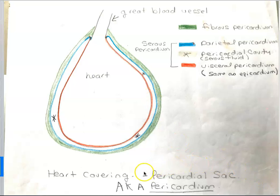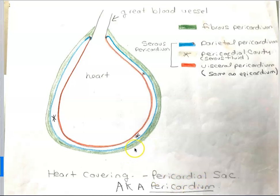So this heart covering, this pericardial sac, has three layers. We have the fibrous pericardium fused to the parietal pericardium, and then we have our pericardial cavity and our visceral pericardium. This whole structure is called the pericardial sac — peri meaning around, cardial referring to the heart. So remember that this is the pericardial sac, also known as the pericardium.